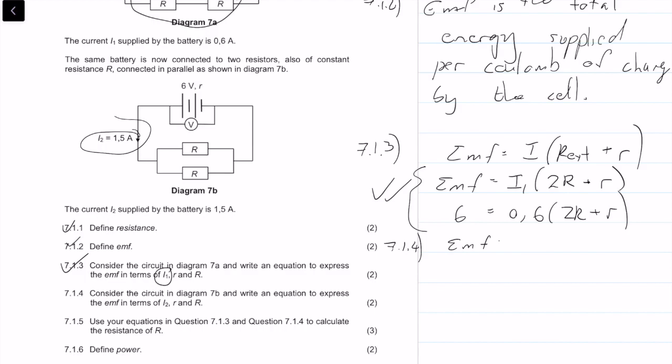We can say that the emf is equal to i2 times r external plus r. But remember, 1 over r parallel is equal to 1 over r plus 1 over r. So r parallel is equal to r over 2.